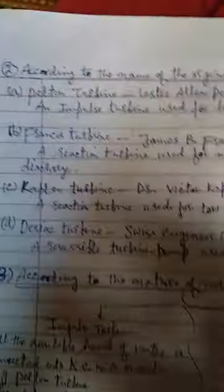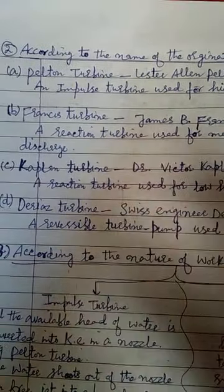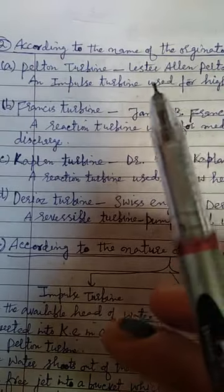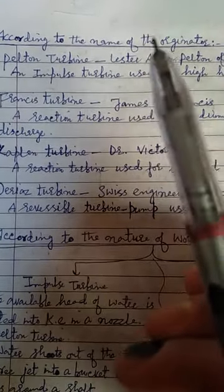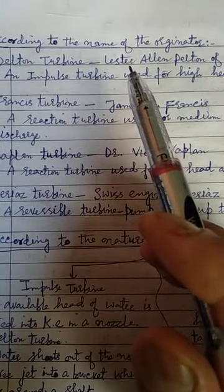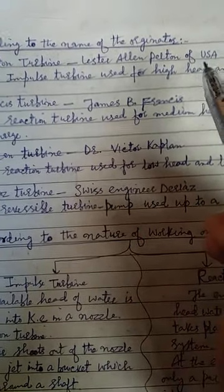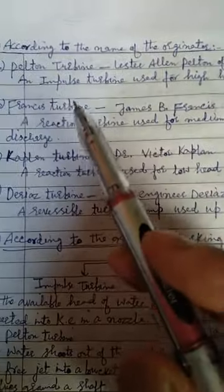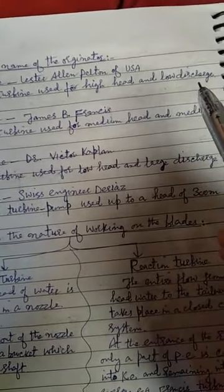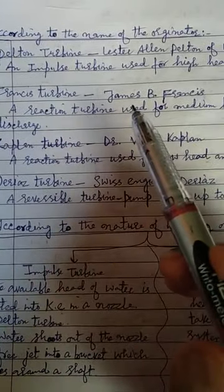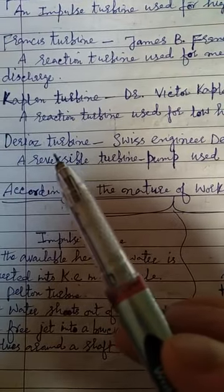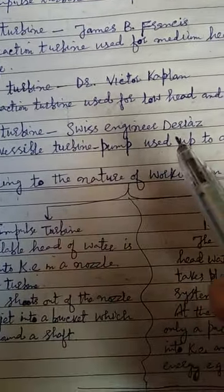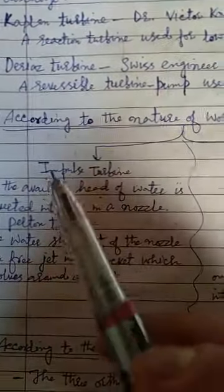Another classification is based on the nature of the originator, meaning turbines are named after their inventors. Pelton turbine was invented by Lester Allan Pelton from the USA — it is an impulse turbine used for high head and low discharge. Francis turbine was given by James B. Francis, Kaplan turbine was given by Dr. Victor Kaplan, and the Darius turbine was given by the engineer Darius.